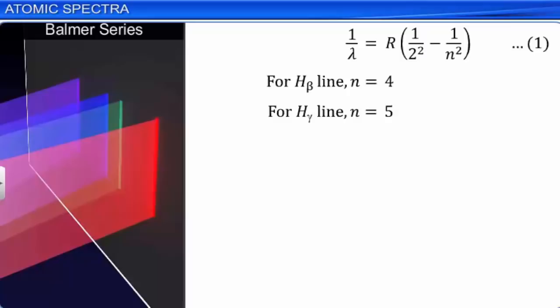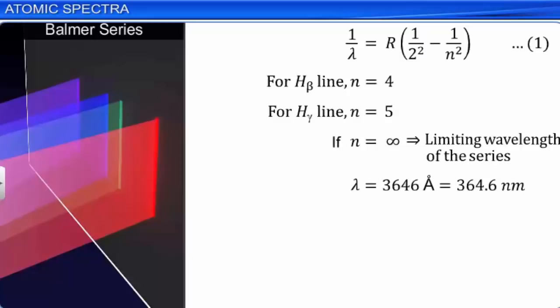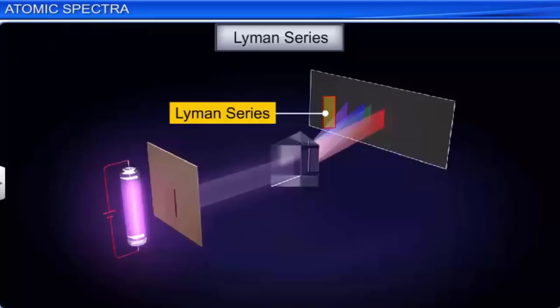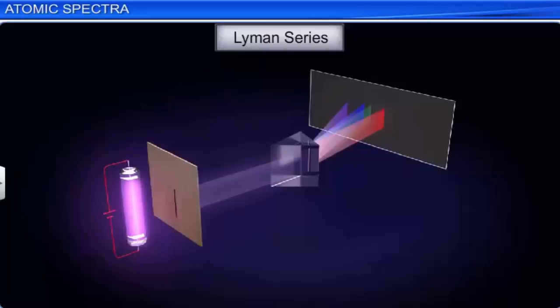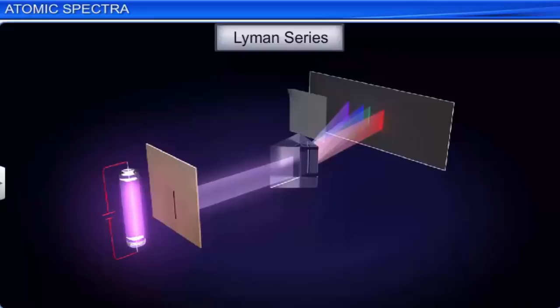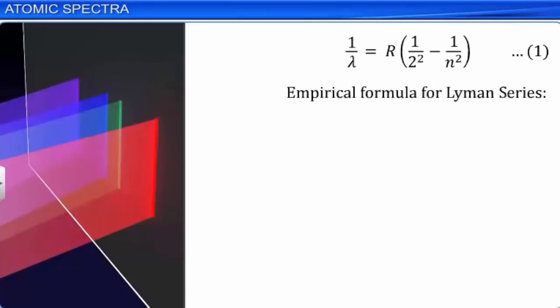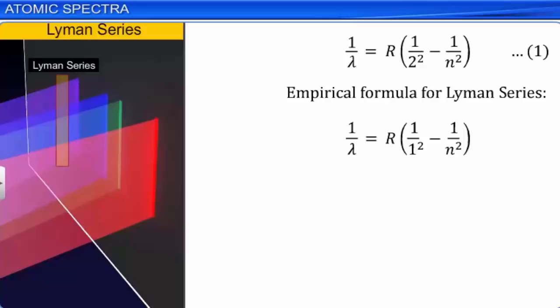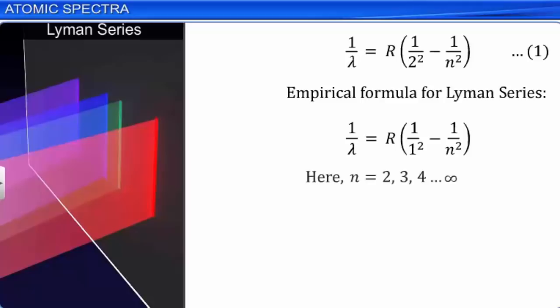Now let us look at the Lyman series, which has wavelengths in the ultraviolet region of the spectrum. The presence of ultraviolet wavelengths can be detected by silver chloride soaked paper, which turns black when exposed to them. The empirical formula for the Lyman series is 1/λ = R(1/1² − 1/n²), where n = 2, 3, 4, and so on up to infinity — equation 2.